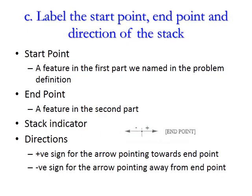Label the start point, end point and direction of the stack. What is a start point? Start point is a feature in the first part we named in the problem definition. The end point is a feature in the second part. The end point should always be a feature in the second part. Stack indicator as shown in the drawing. Directions: the positive sign for the arrow pointing towards the end point, and negative sign for the arrow pointing away from the end point.